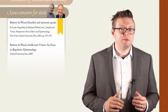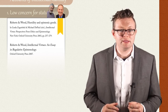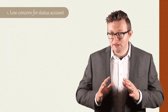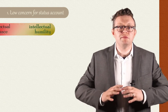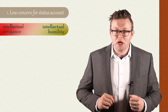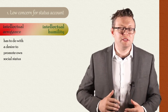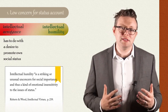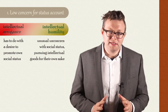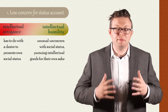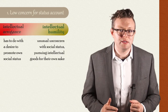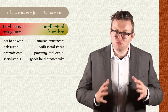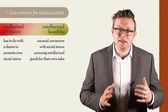In their 2003 article "Humility and Epistemic Goods" and their 2007 book "Intellectual Virtues: An Essay in Regulative Epistemology," Bob Roberts and Jay Wood give us what is now the seminal account of intellectual humility in the literature. According to their account, the low concern for status account, intellectual humility is viewed as merely the opposite of intellectual arrogance or improper pride. These vices are centered on the promotion of the social well-being of the possessor, and as such, intellectual humility is a striking or unusual unconcern for social importance, and thus a kind of emotional insensitivity to the issues of status. The thought here is that the intellectually humble person isn't concerned about the status that might be accrued by pursuing intellectual endeavors; instead, they pursue intellectual goods for their own sake. There are quite a few things to like about this view — it seems to rightly capture a social dynamic to the virtue — but I think it also has some serious problems.